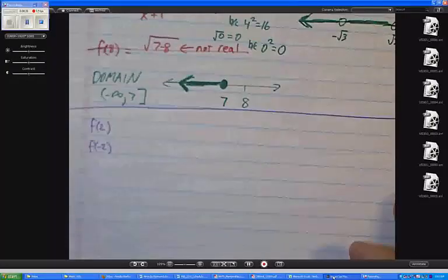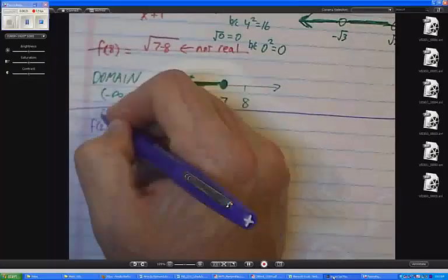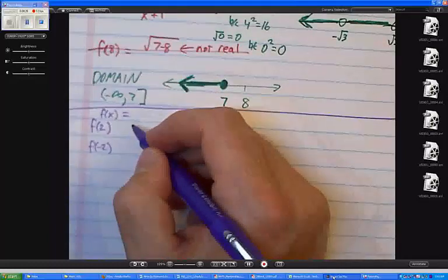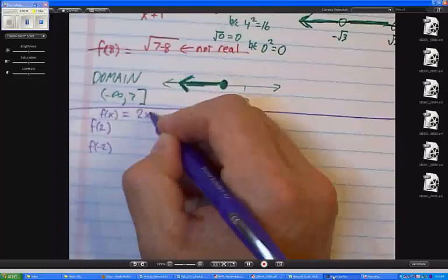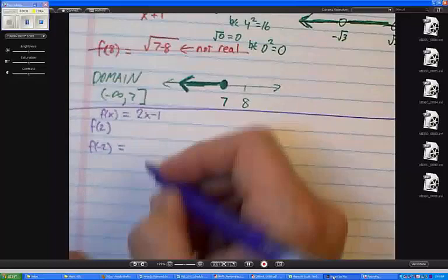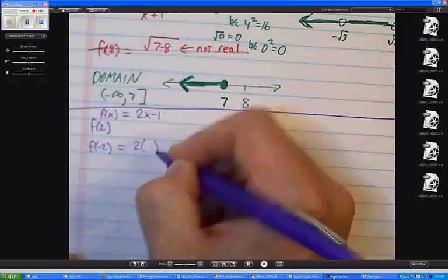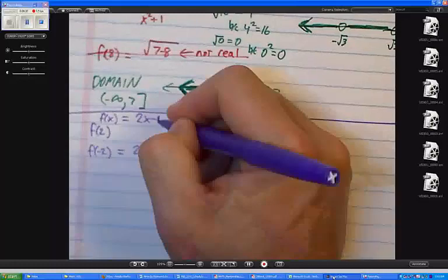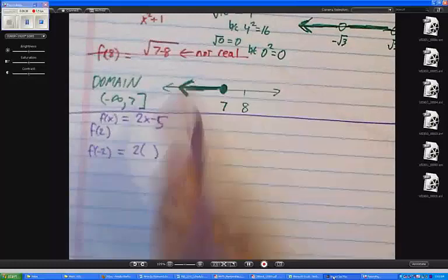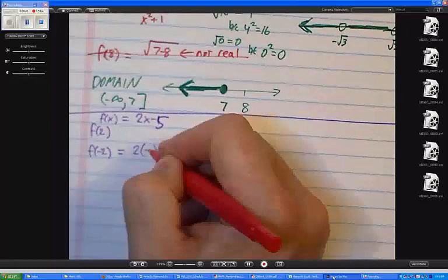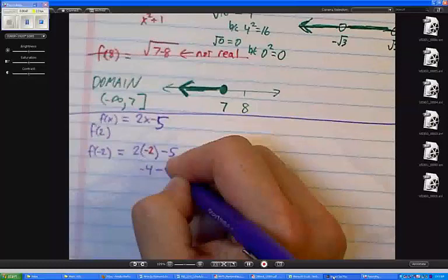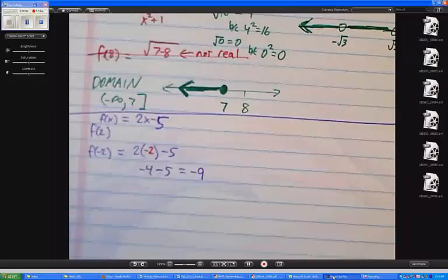The function is f(x) = 2x - 5. So you guys understand, when I want to find f of negative 2, everywhere that it used to say x, what should I write? Negative 2. And then I just have to work out what it is, so I'm getting negative 9. f of negative 2 is negative 9.